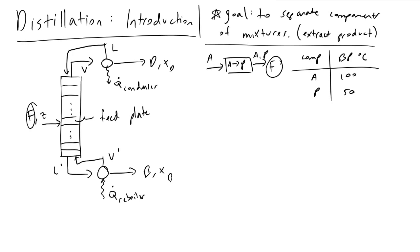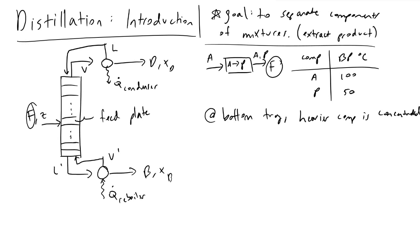At the bottom tray, the heavier component is concentrated. This is because a liquid is descending the column, and the heavier component A is more likely to exist in that liquid phase falling down the column. So when we reach the bottom tray, it will be very concentrated in our heavier component, which is our reactant A.